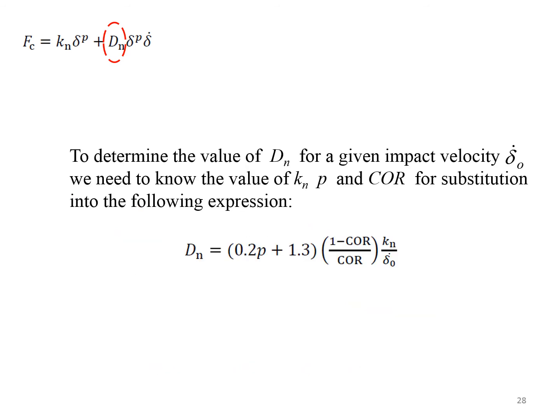Once the parameters p, k subscript n, and coefficient of restitution have been obtained, then the parameter d subscript n forming part of the Hunt and Crossley expression can be found readily.